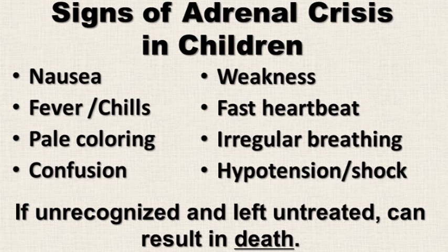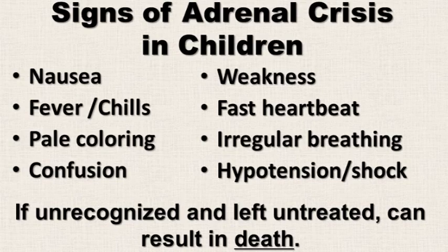The signs and symptoms of adrenal crisis in children typically include nausea, fever and chills, a pale coloring or pallor, confusion and headaches, weakness and extreme lethargy, a fast heartbeat — also called tachycardia — irregular breathing, and hypotension, which is low blood pressure, and shock. If unrecognized and left untreated, these can produce a sequence of events that can unfortunately lead to death. It is important that you understand the signs and symptoms of adrenal crisis and know how to act.